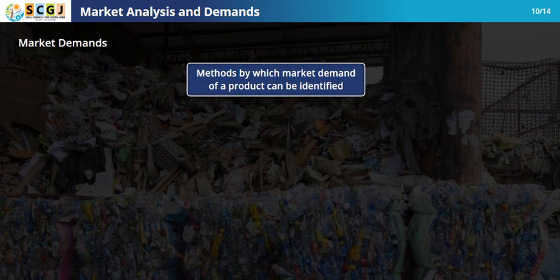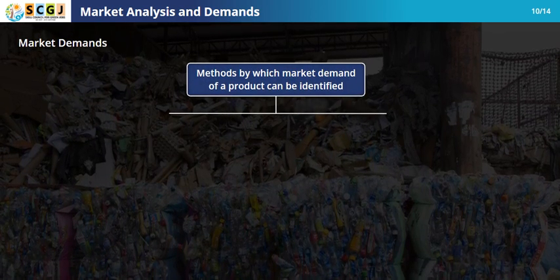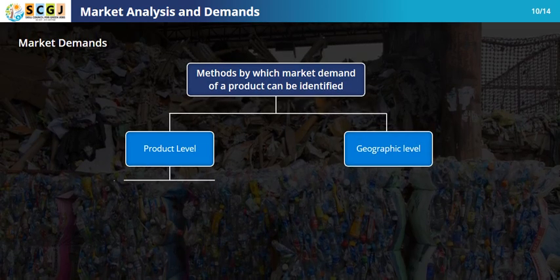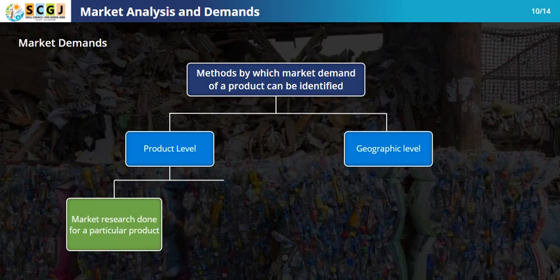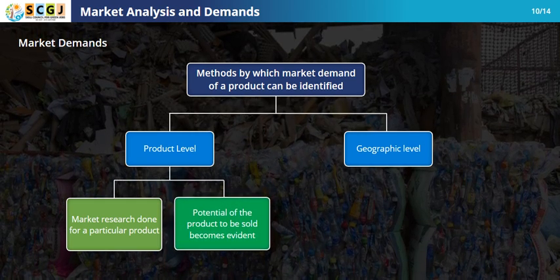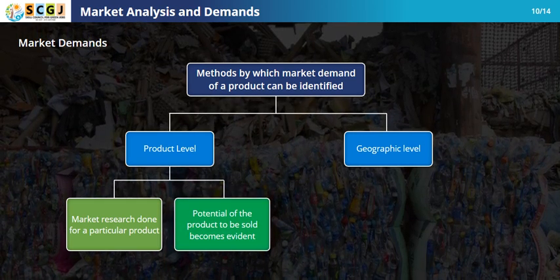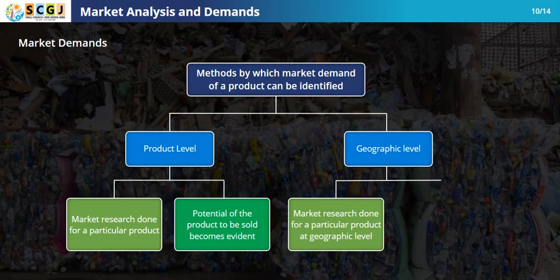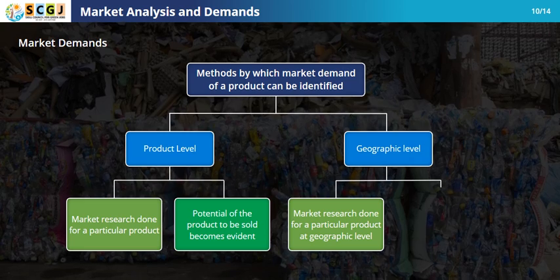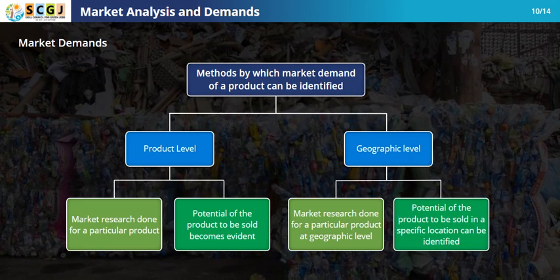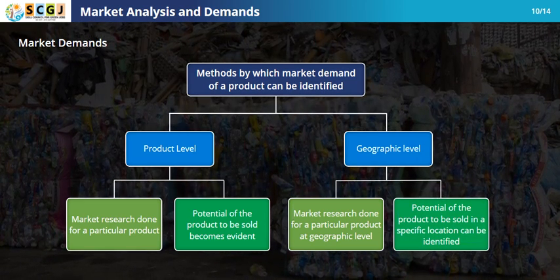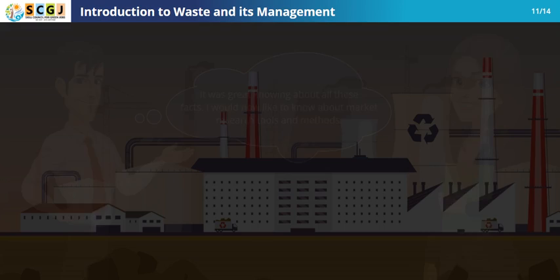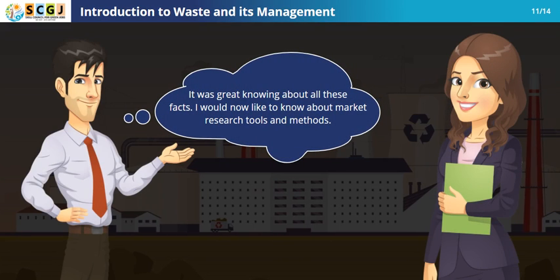The market demand of a product is dependent upon two factors: product level and geographical level. When market research is done for a particular product, its potential to be sold in the market becomes evident. With geographic level market demand research, products with higher potential to be sold in a specific location can be differentiated.